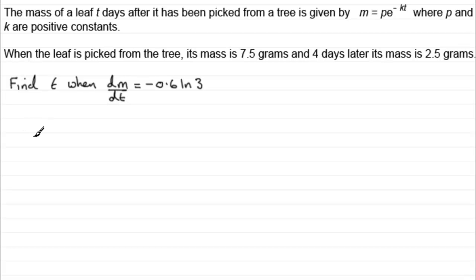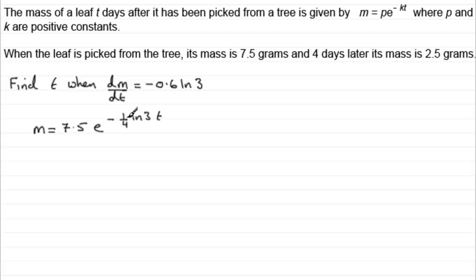We have that m equals p, which we found earlier to be 7.5. So 7.5, then it's e to the power minus kt. k we found to be minus 1/4 multiplied by the natural log of 3, so that's multiplied by t. To avoid it reading as natural log of 3t, we put the t with the quarter as t over 4. So we've got e to the power minus t over 4 natural log of 3.